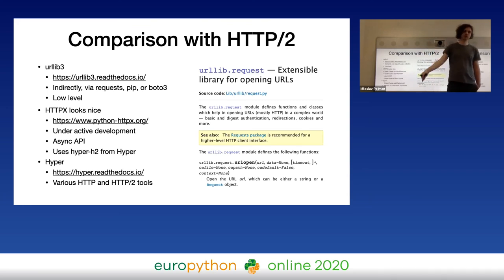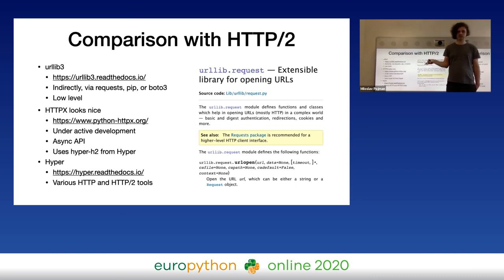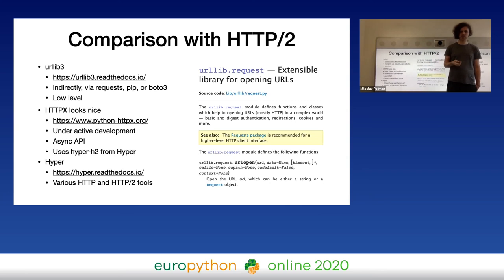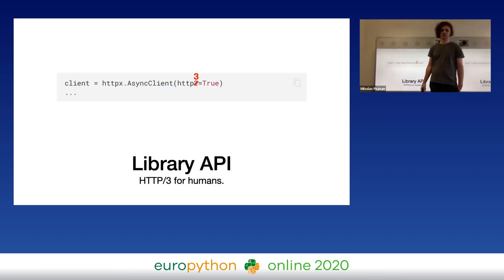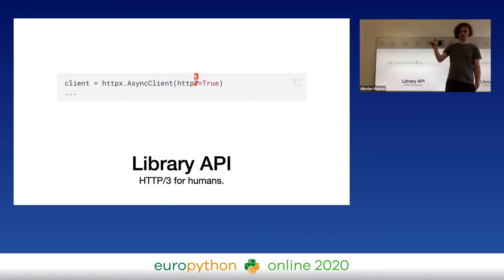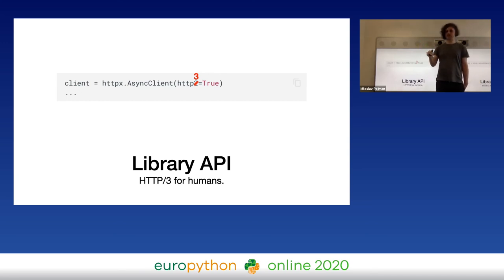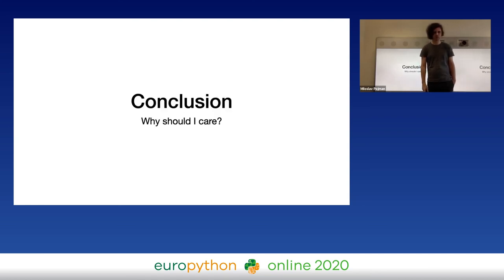Before speaking about migration to HTTP/3, I should probably talk about HTTP/2 first, because I guess most of you don't even use HTTP/2 in Python yet. The most common Python library for issuing HTTP requests is urllib3 — you probably use it as a dependency of pip or requests — and it does not support HTTP/2 yet. If I had to choose a library for HTTP/2, I would use HTTPX, which has a nice API and supports async invocation. So if I have to use HTTP/3, I would like a library like HTTPX that supports all the protocol versions and is asynchronous — one that chooses the best HTTP version for me. Until I have that, I will probably use HTTP/1 from the 90s.